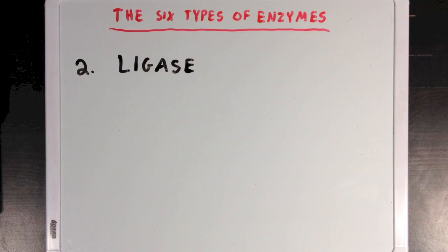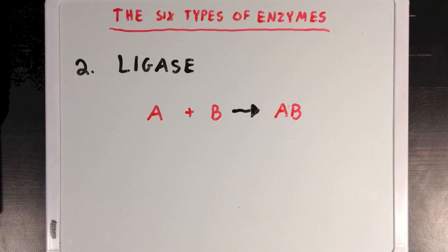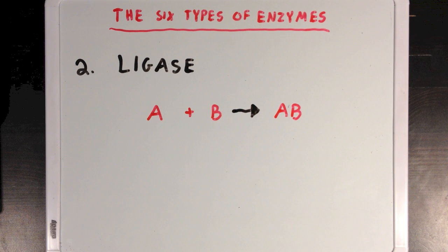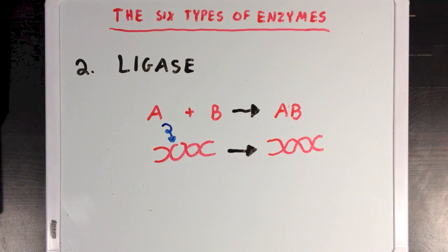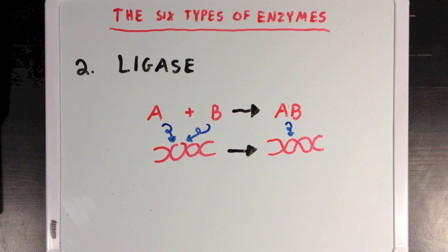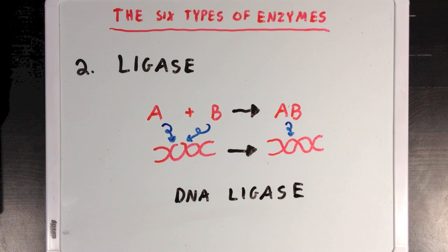Next we have the ligase group, which catalyzes reactions between two molecules A and B that are combining to form a complex, or AB. An example occurs during DNA replication, where two strands of DNA are being joined together. In this reaction, A and B represent the two separated DNA polymers being joined into a single strand. This reaction is catalyzed by an enzyme called DNA ligase, named since it's a ligase that works on DNA strands.